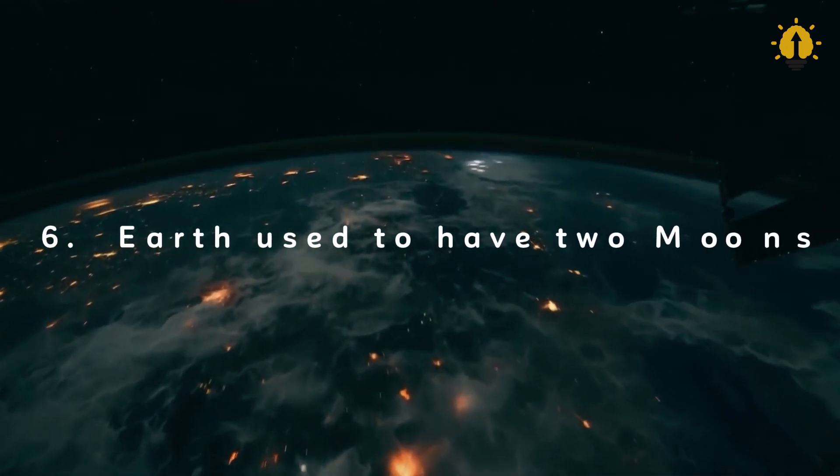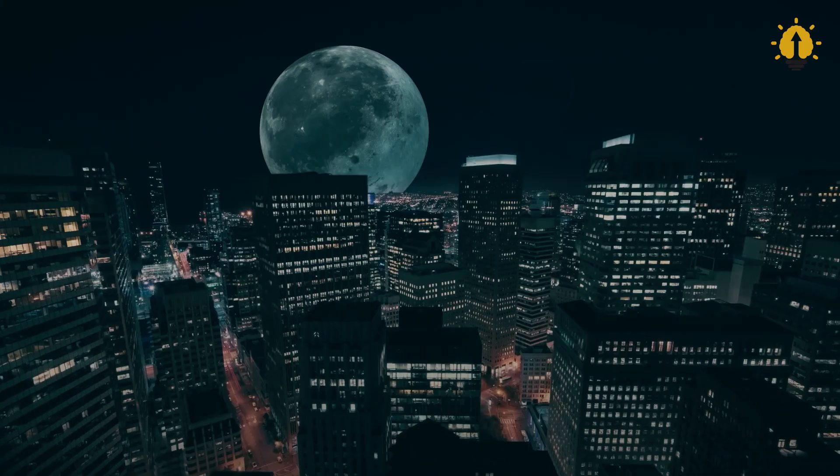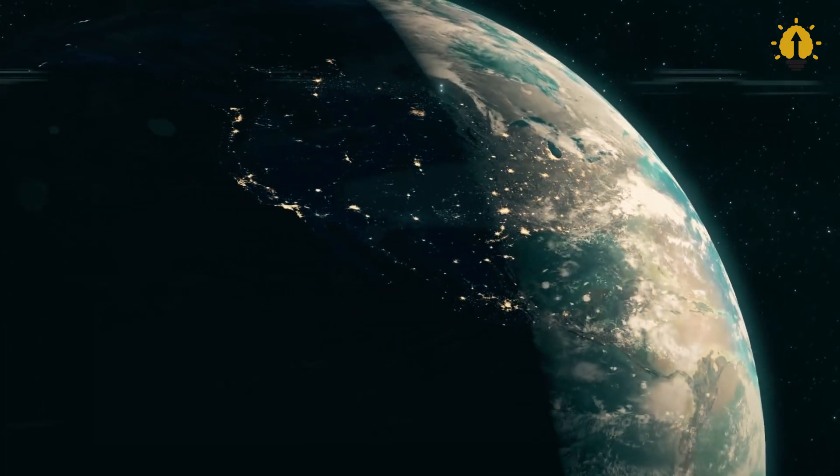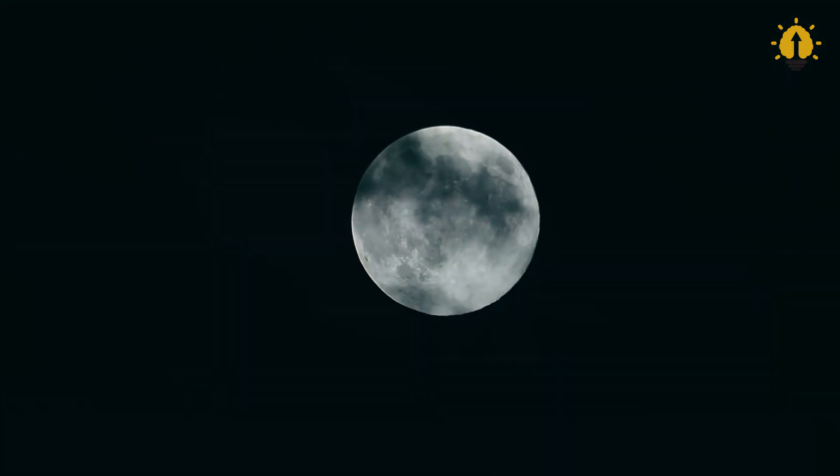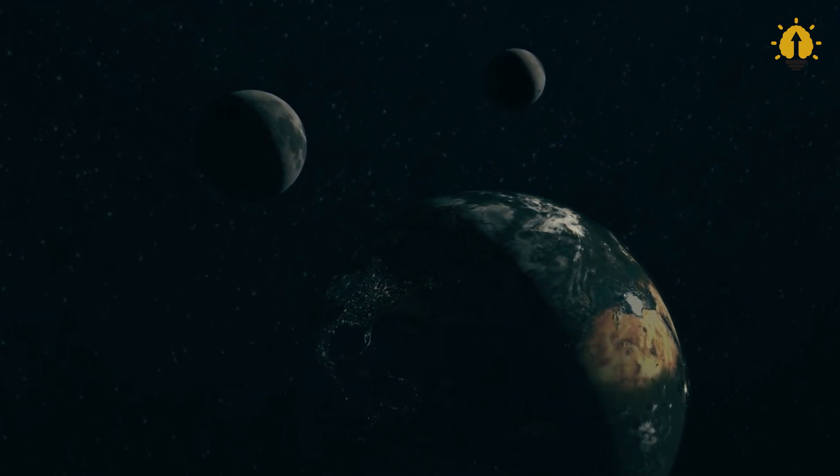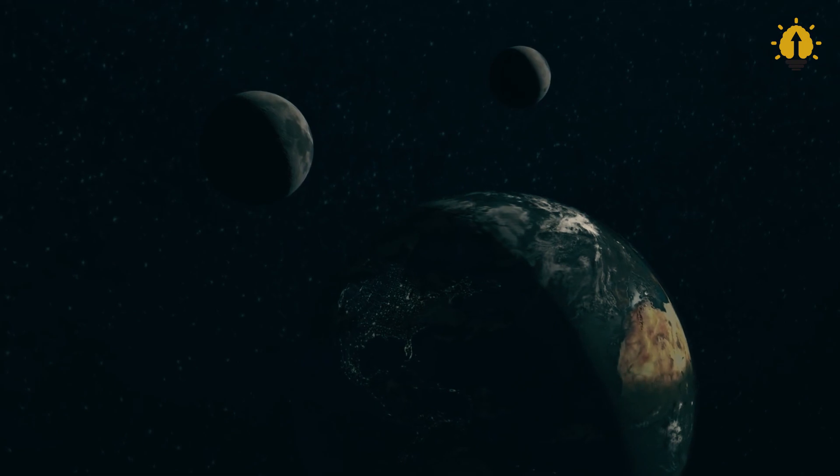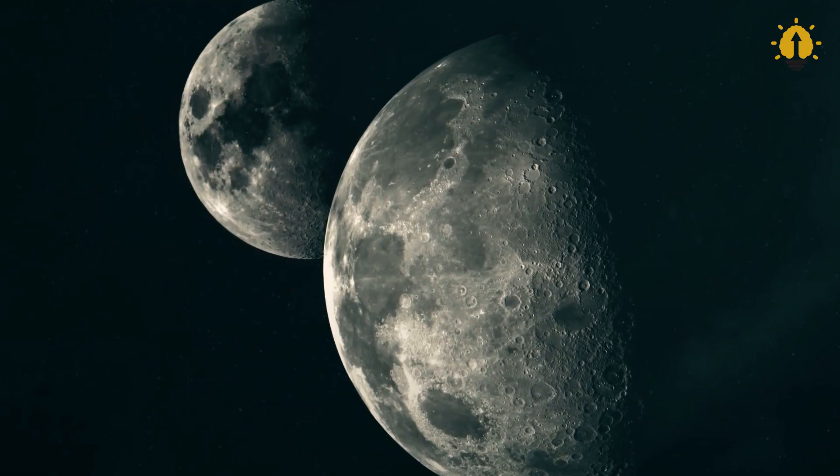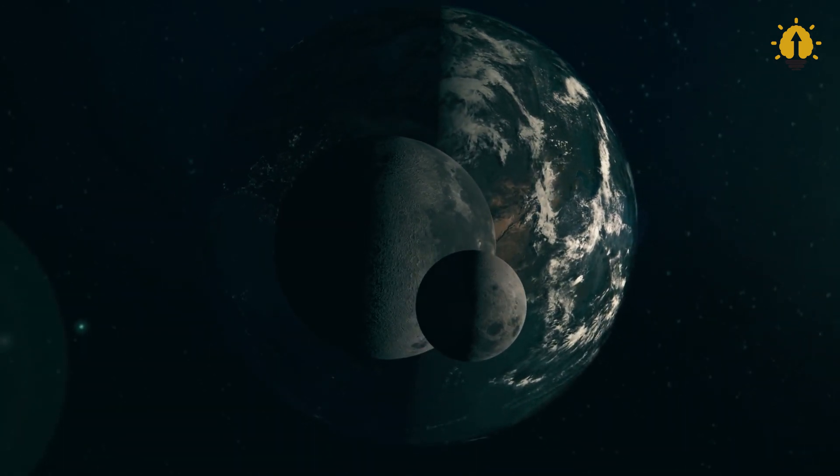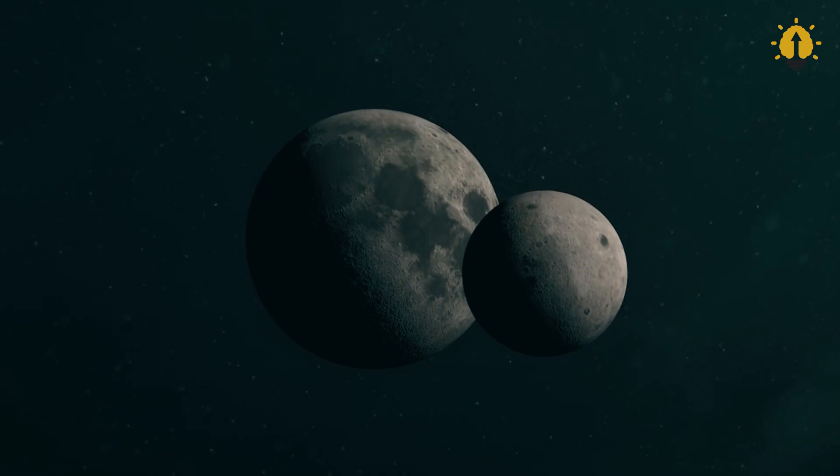Number 6: The Earth Used To Have Two Moons. I know this might sound like a conspiracy, but this theory is backed by some pretty credible science. Around 4.5 billion years ago, our Earth likely played host to not one, but two moons. It was published in the prestigious journal Nature back in 2011, explaining why the moon has two very distinct faces. The side facing Earth boasts smooth, lava-covered planes, while the mysterious, dark side of the moon is all rocky and rugged.